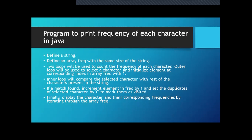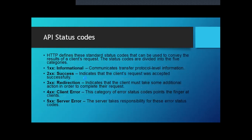Here is the algorithm. First, define a string, then define an array 'frequency' with the same size as the string. We are going to use two for loops to count the frequency of each character. The outer loop selects a character and initializes the element at the corresponding index in the frequency array with one, while the inner loop compares the selected character with the rest of the characters in the string. Once a match is found, the element is incremented in frequency by one. We also set duplicates of the selected character to zero to avoid recounting. Finally, we display the character and its corresponding frequency — for 'Java', output would be J=1, A=2, V=1.